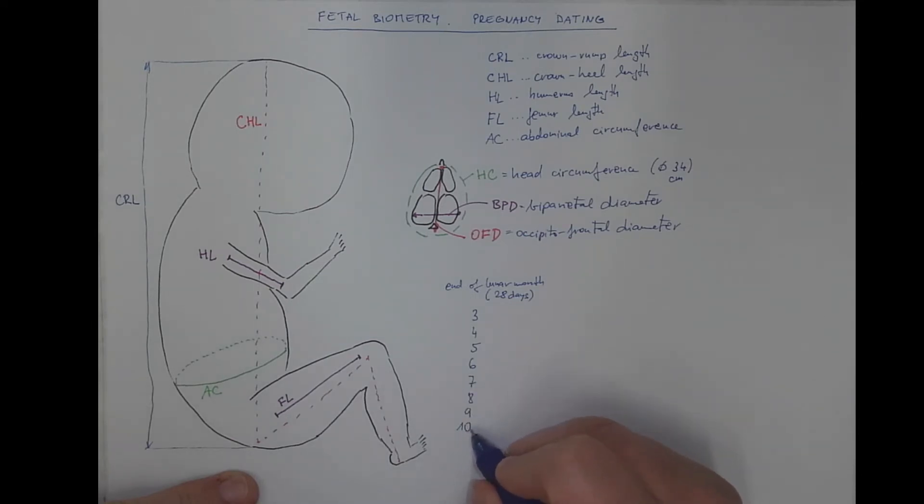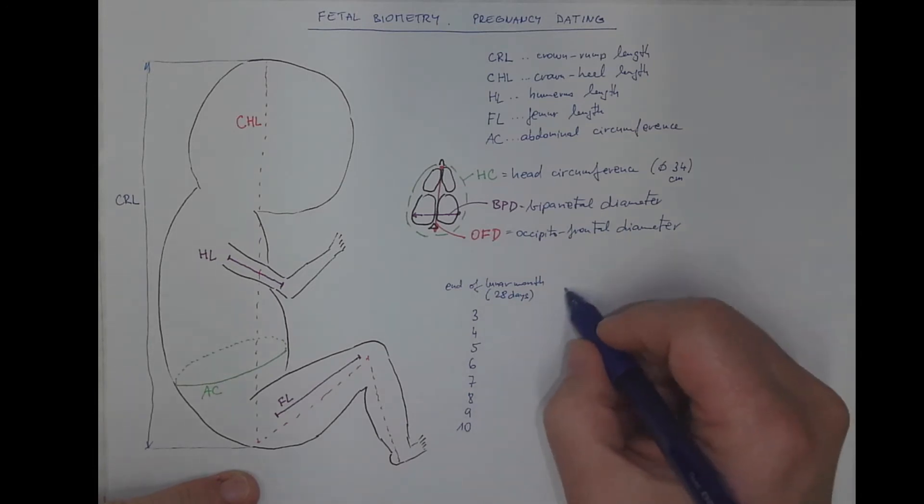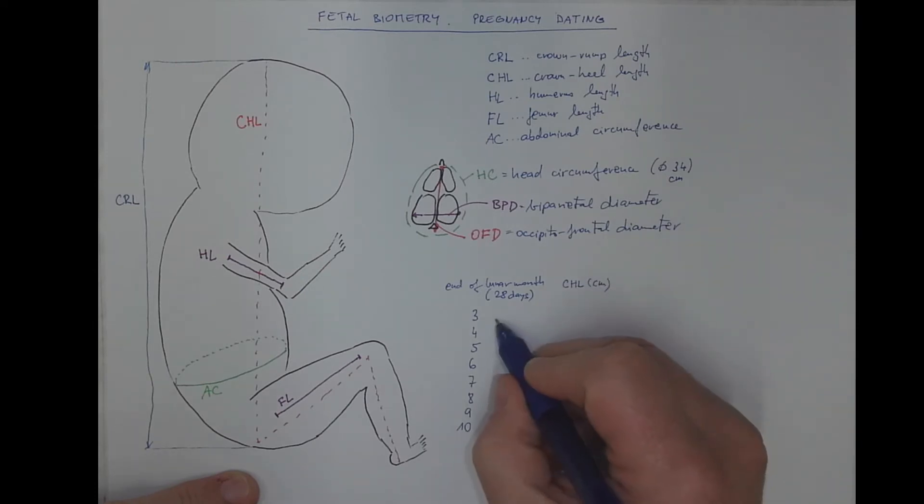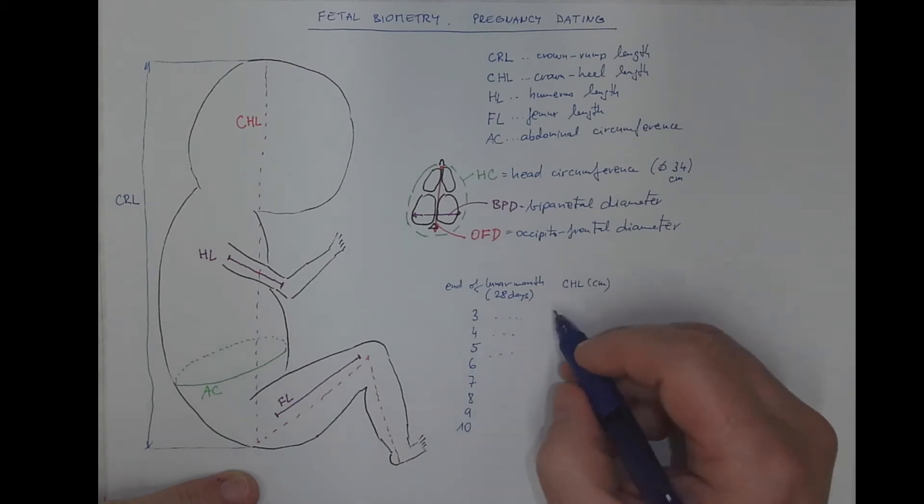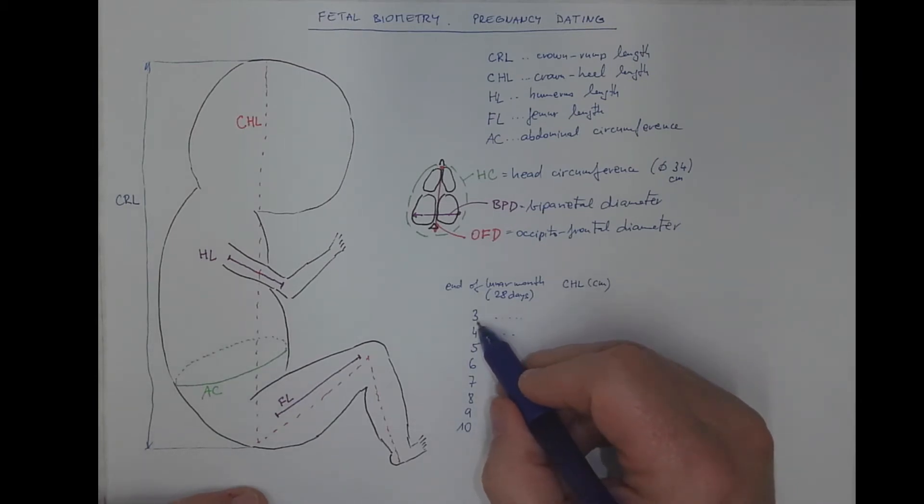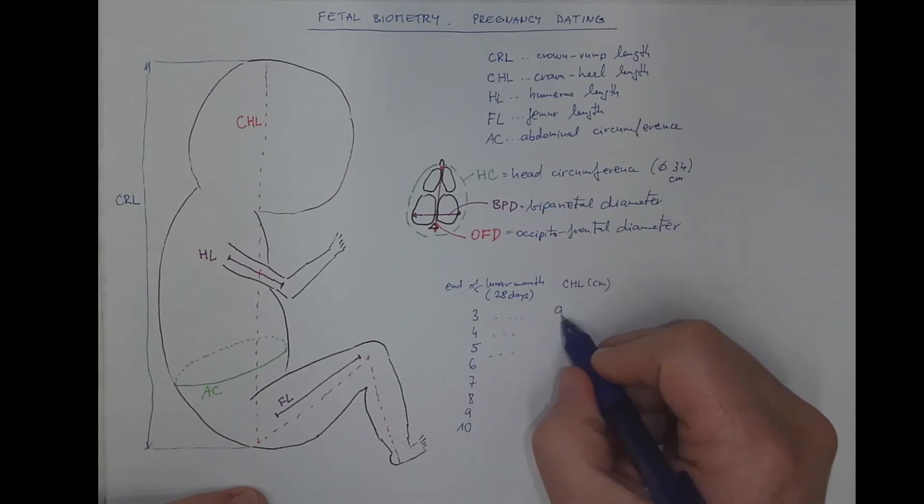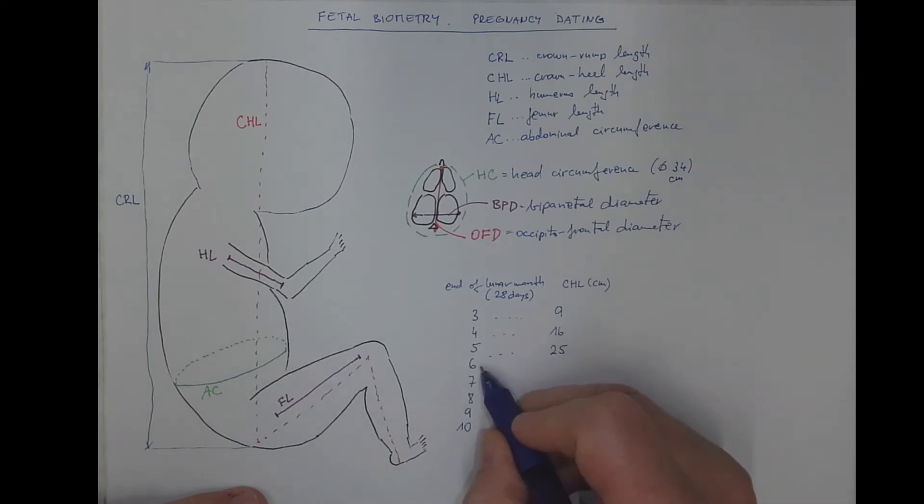And the crown heel length in centimeters would be in the first... In these three months it would be the number of the month squared. So this is 9 centimeters, 16 centimeters, 25 centimeters. Then the rule changes and it's like approximately 30, 35, 40, 45 and 50 centimeters.